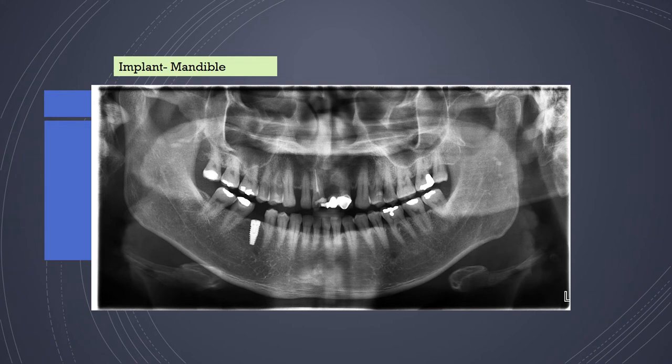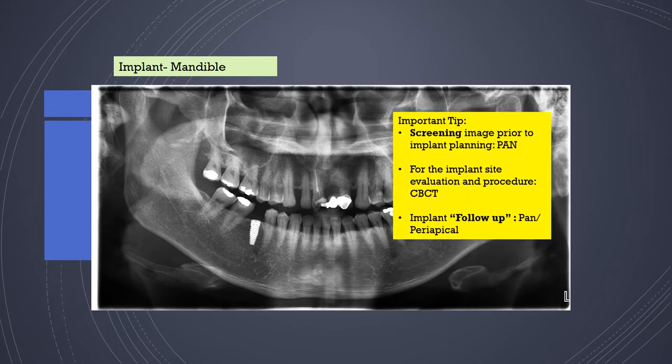For implant placement, the panoramic radiograph acts as a scout or preliminary image before placing the implant. The screening image prior to planning should be panoramic, while for the implant site evaluation itself, the preferred imaging is CBCT. For follow-up of the implant, panoramic or periapical radiographs can be taken.